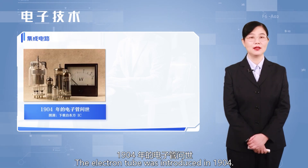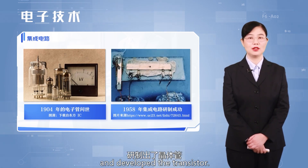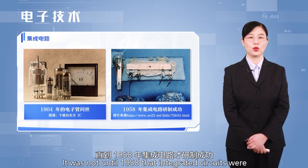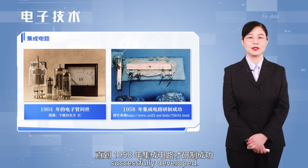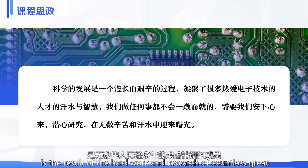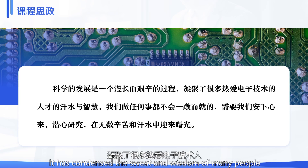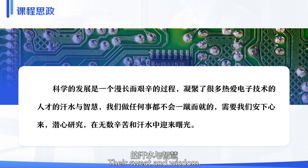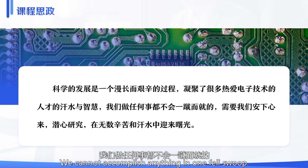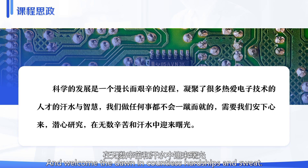The electron tube was introduced in 1904. Scientists explored for more than 40 years and developed the transistor. It was not until 1958 that integrated circuits were successfully developed. The development of science and technology is the result of the hard work and research of countless great people. The development of science is a long and arduous process, condensing the sweat and wisdom of many people who love electronic technology. We need to calm down and study diligently, welcoming the dawn through countless hardships.